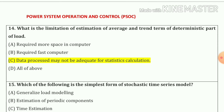Question number 14. What are the limitations of estimations of average and trend terms of the deterministic part of load? The answer is: data process may not be adequate for the statistical calculations. So option number C is our correct answer.